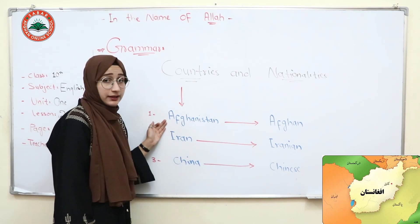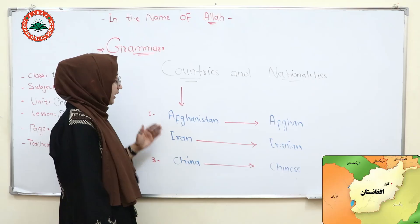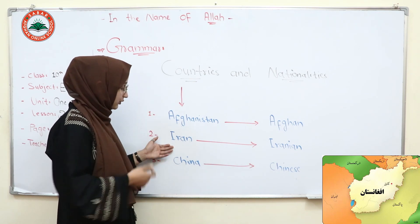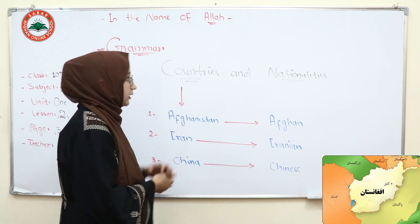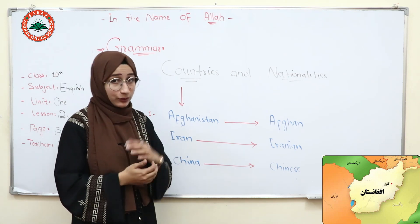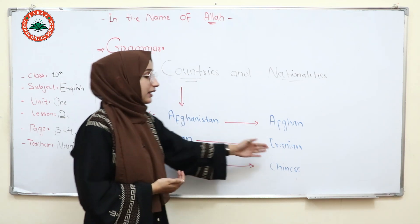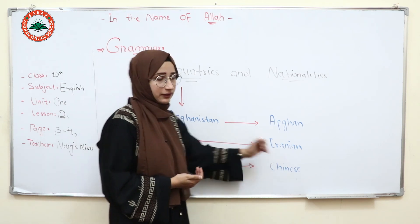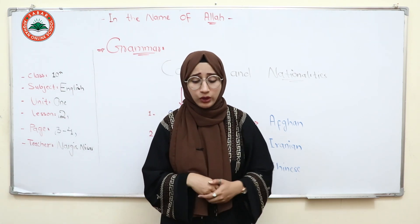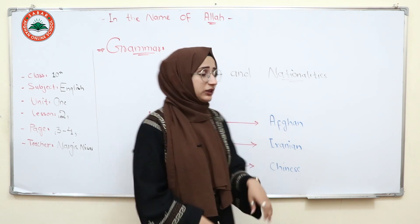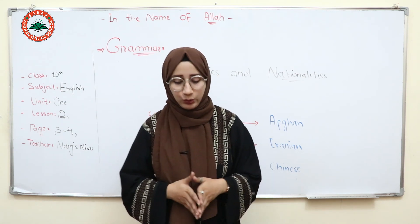For example, Afghanistan is a country because there is a geographic area. Iran is a country, China is as well a country. Now let's come to the nationalities. There are a lot of people in Afghanistan, in Iran, and in China.